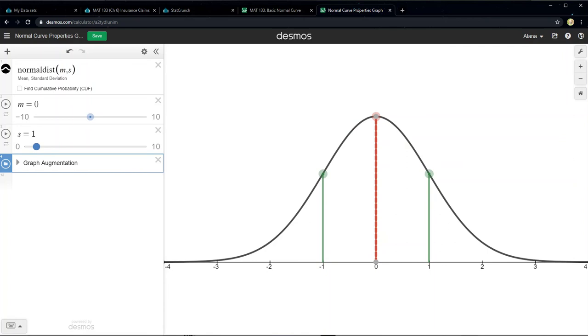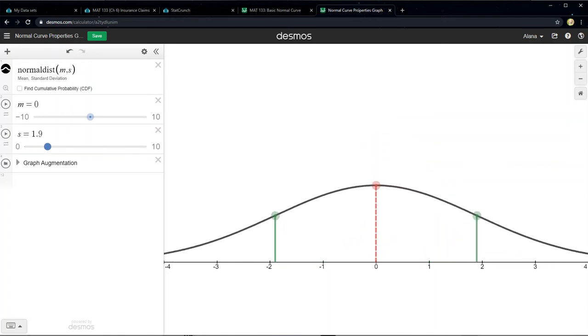All right. So I made the mean 0. So that center line is right at 0. Lovely. And now I want to show what happens if I make standard deviation get larger. So currently, the standard deviation is 1. If I slide it over here and increase it to, say, 2, look at what happened to the curve.